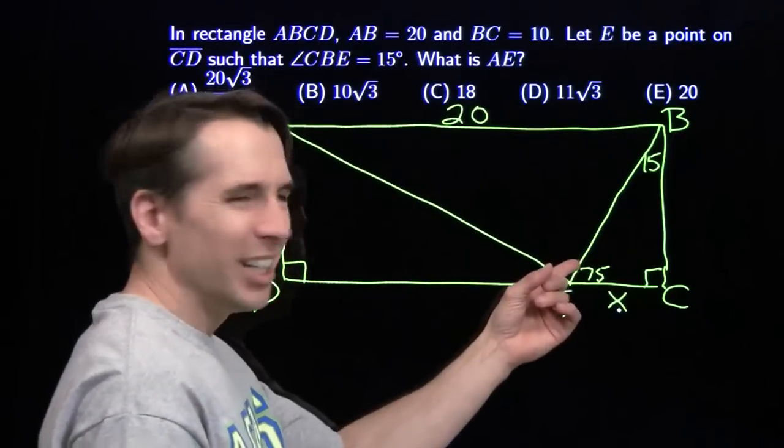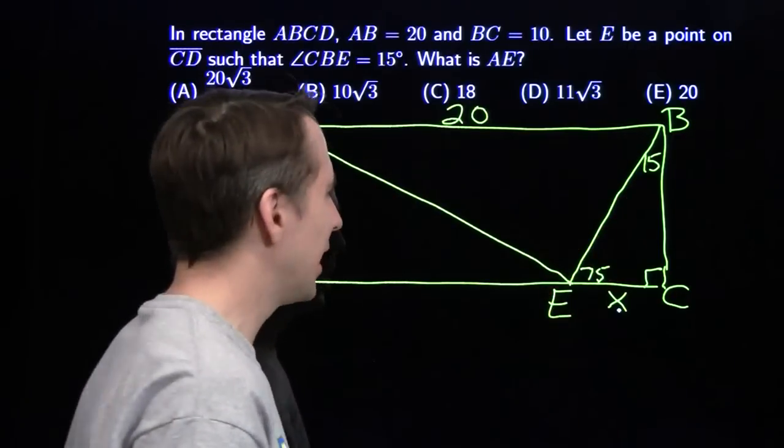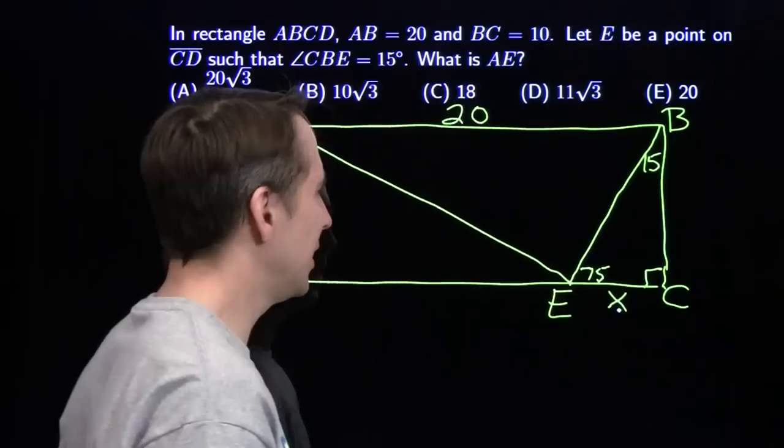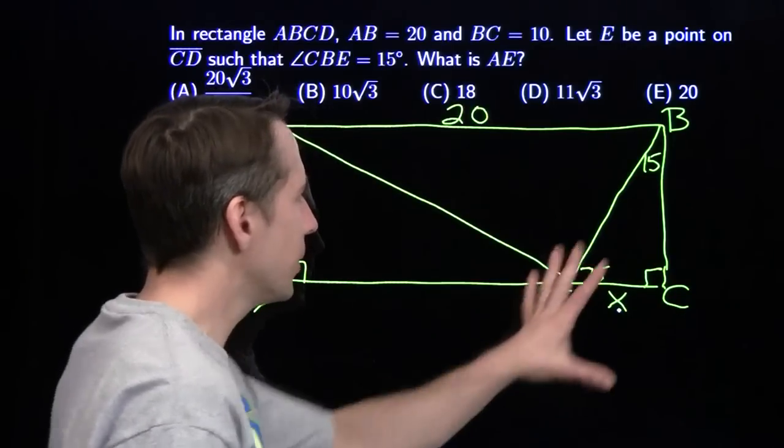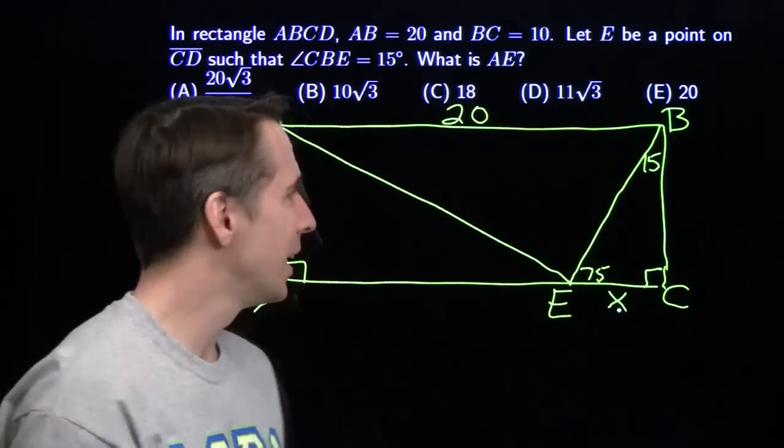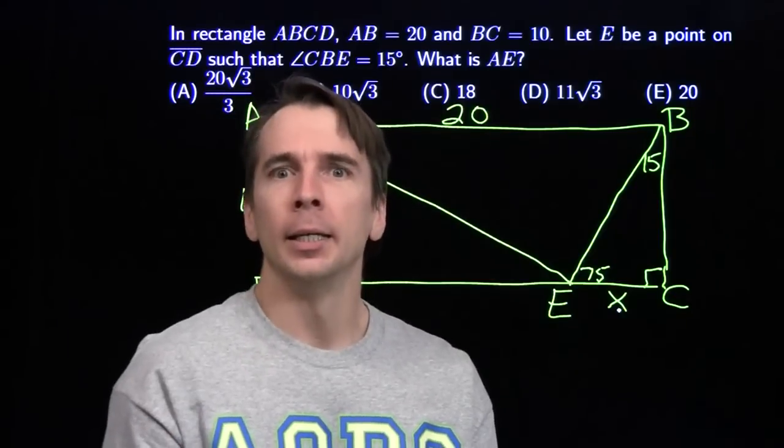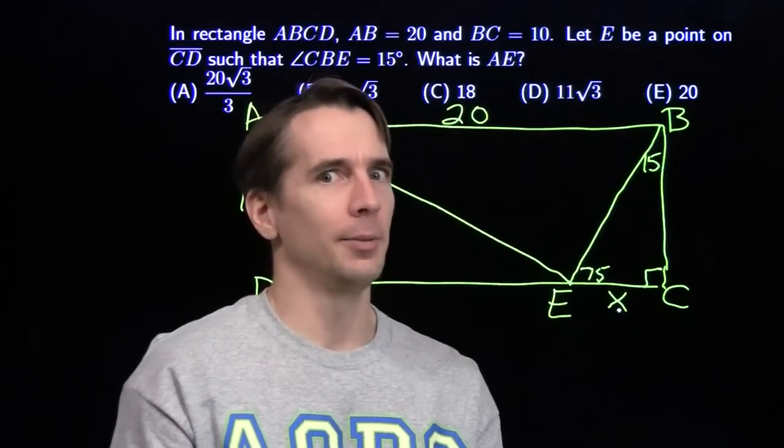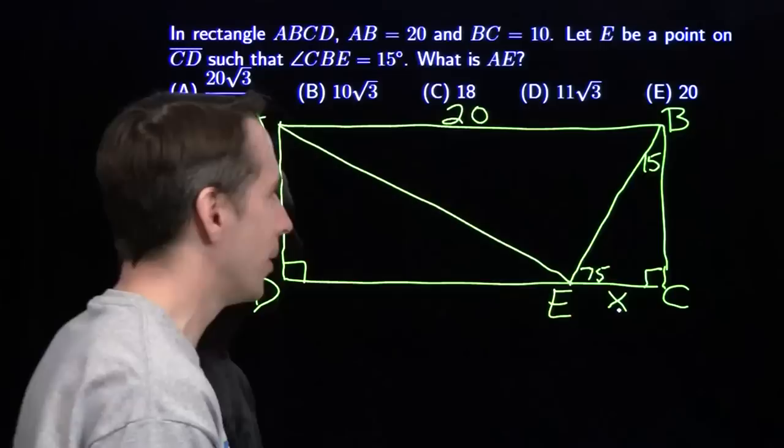But over here, you have these 15 and 75 degree angles. I don't like 15 and 75 degree angles. I don't really know what to do. I mean, it's a right triangle. I like that. Now, I could break out some trig, but this is the AMC 10. And breaking out the trig on the AMC 10, that wouldn't be very sporting.